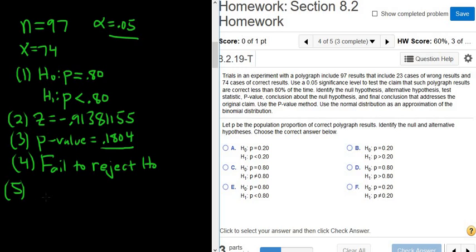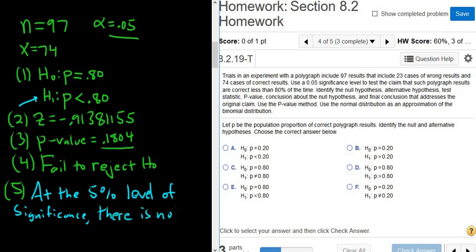Step five is the interpretation. We always start our interpretations by mentioning the level of significance. So at the five percent level of significance. And if we reject H0, then there is enough evidence to say H1 is true. Because we fail to reject H0, there is not enough evidence to say H1 is true. So if reject, there is; fail to reject, there is not sufficient evidence to claim that.